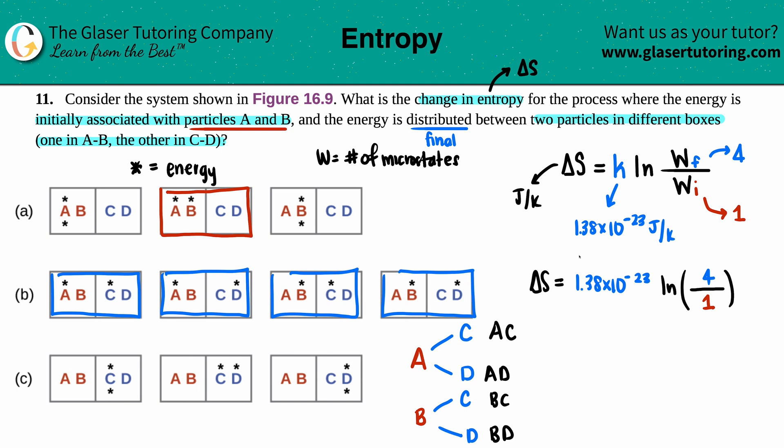Now all we have to do is calculate. I'm just going to plug this into the calculator. So ln of four times 1.38 times 10 to the negative 23rd, and my delta S value is, we'll do two sig figs, 1.91 times 10 to the negative 23rd joules per kelvin.